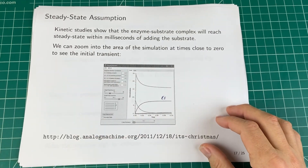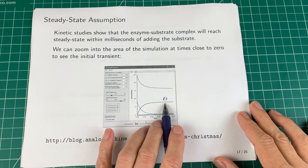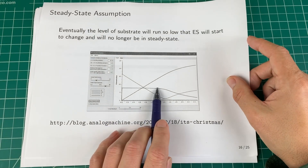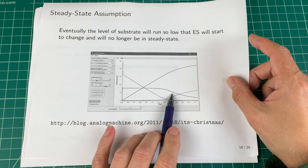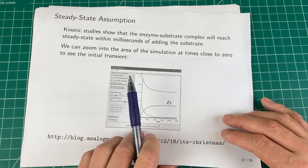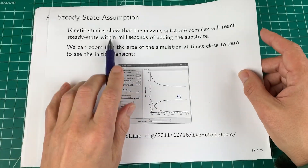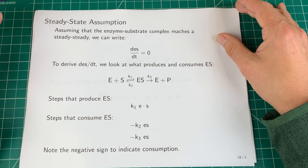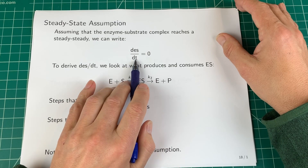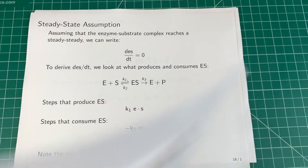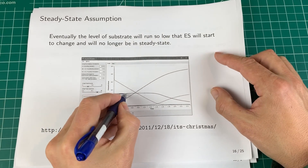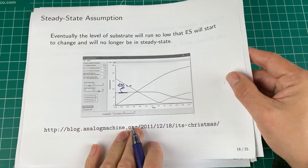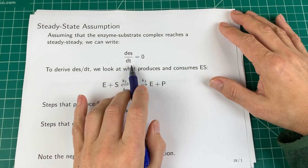In real enzymes, this steady state is reached within milliseconds — about 5 to 10 milliseconds. So by the time you start measuring things, you're already at steady state. Eventually everything runs down and the steady state ends, but during the main measurement period you are at steady state. So let's make that assumption — the steady state assumption — instead of the rapid equilibrium assumption.